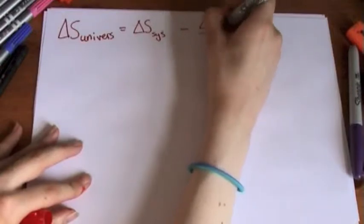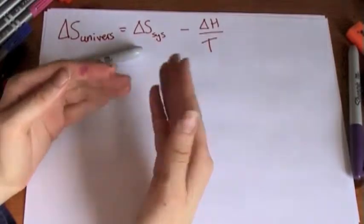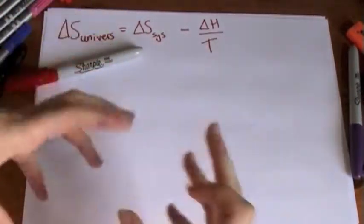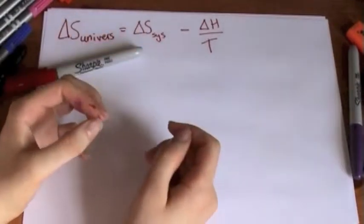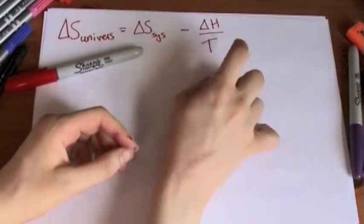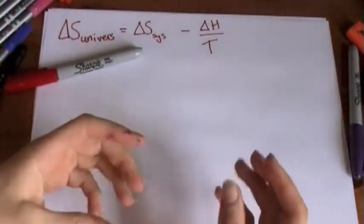And the reason it's divided by temperature is if you think you have a really hot room, if you add a bit more heat to it or take away a bit more heat from it, the entropy of that room, the gas, the molecules in there isn't going to change a lot. So if temperature is really large, then the effect of enthalpy on the entropy of the system is going to be small.